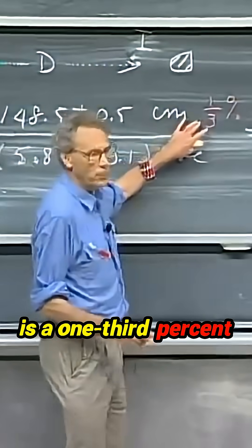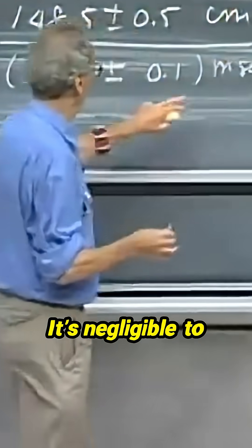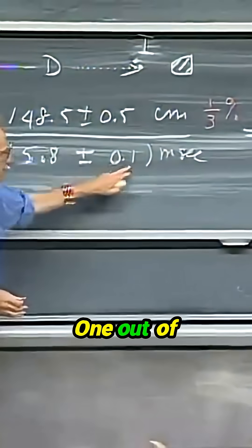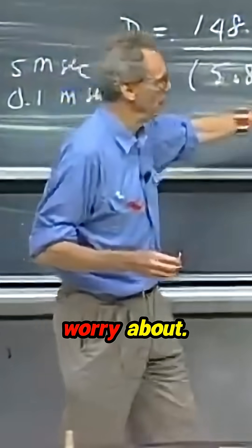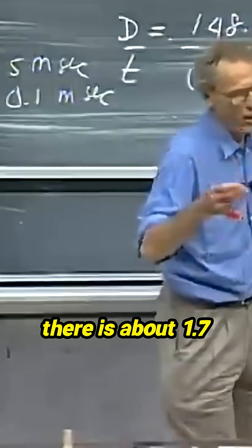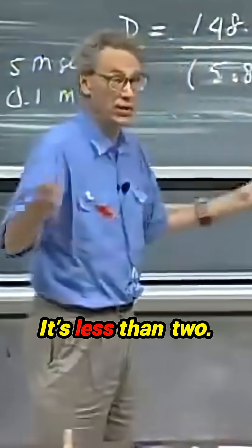This is a one-third percent error. It's negligible to this one. One out of 58 is about 1.7 percent. So this is the only one we have to worry about. So the uncertainty in there is about 1.7 percent. It's less than two.